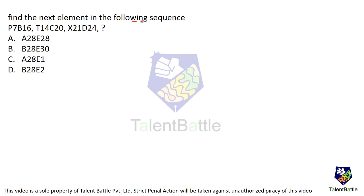Find the next element in the sequence: P7, B16, T14, C20, X21, D24. If you observe carefully, the second letters are B, C, D — so the next has to be E. And 7, 14, 21 — by common sense, the next one has to be 28. So far, everywhere it appears to be E28.